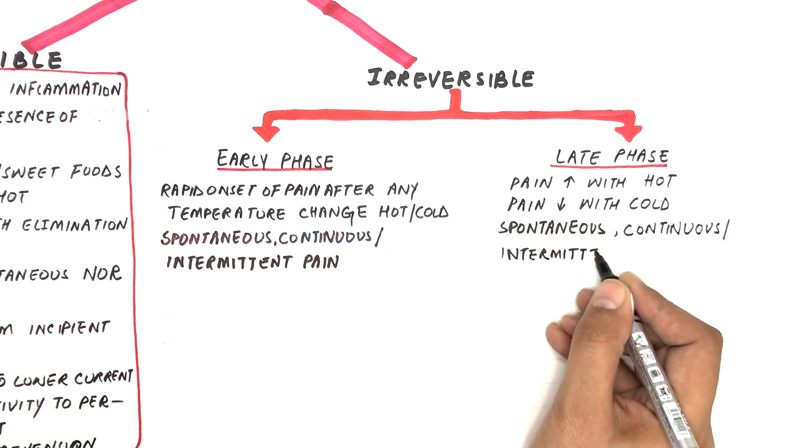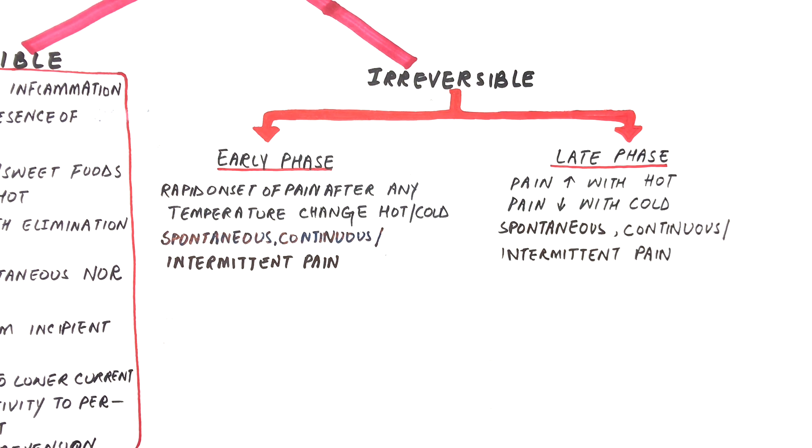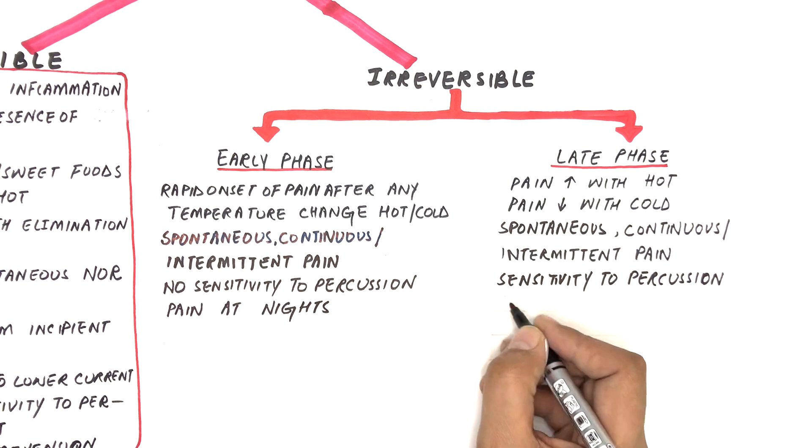Tooth becomes sensitive to percussion in late phase, hence more localized by the patient, whereas no pain on percussion exists in early phases. Hence, the patient usually cannot identify the involved tooth.